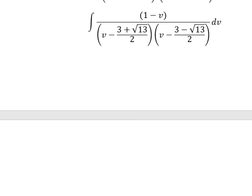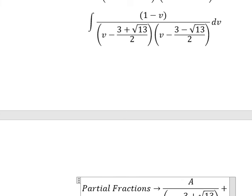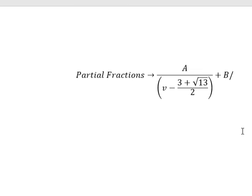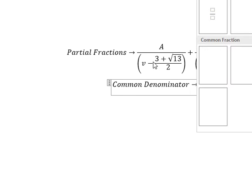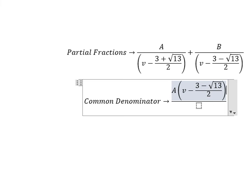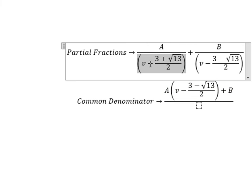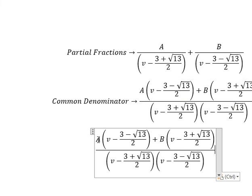Next, we can use partial fractions. So I will put A over this one and B over this one. We do common denominator. So capital A is multiplied by this factor and B is multiplied by this factor. A multiplied by this one and these numbers. B multiplied by this one and this number.